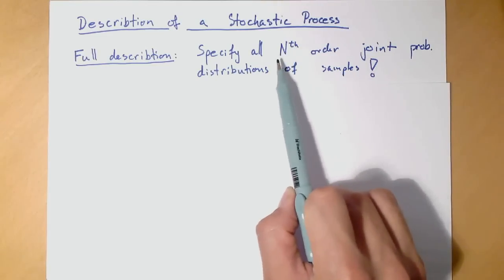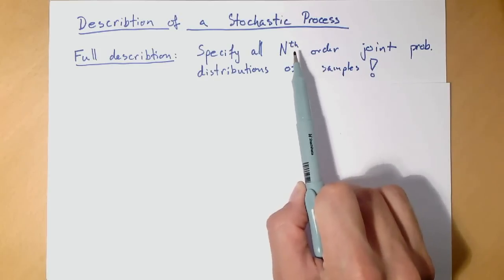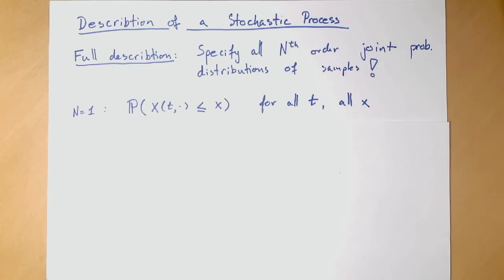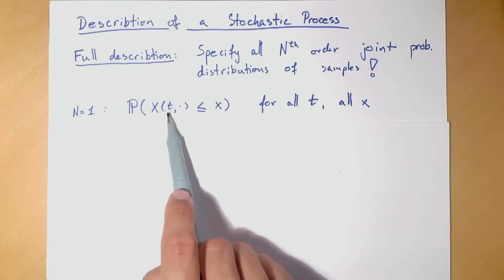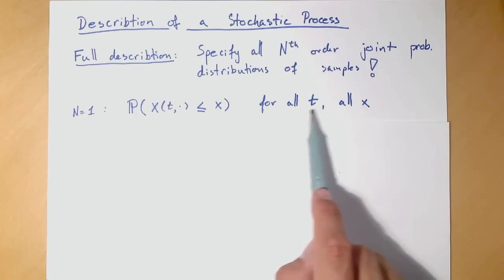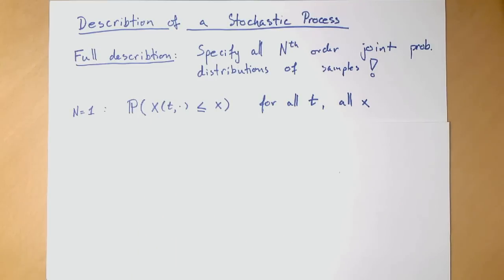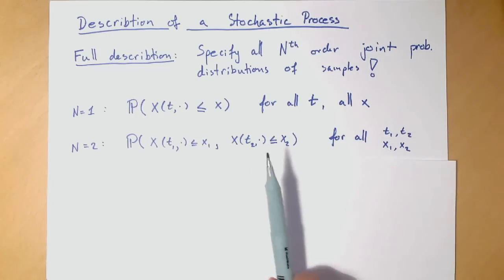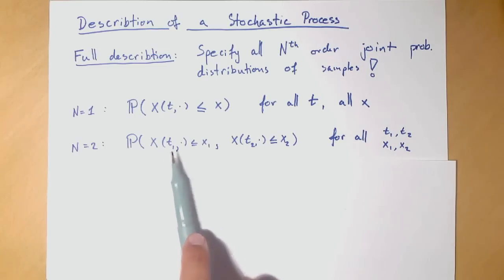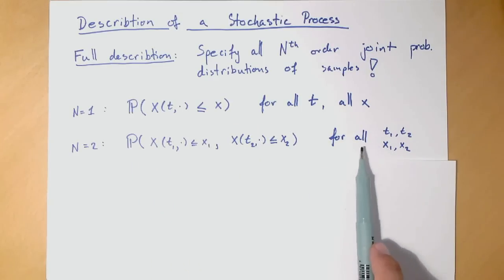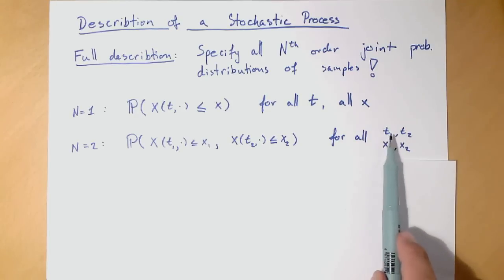And here n could be any positive integer. So that actually means that we need to describe the probability mass functions for x(t) for all t, for any time value. We will need to have access to the probability mass function of samples of the stochastic process. We will also need all joint probability mass functions. So for any time t1 and any time t2, we need the joint probability mass function. So we need to be able to do that for all t1 and t2.